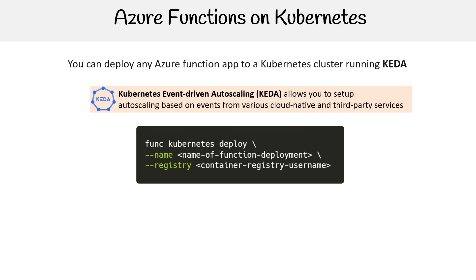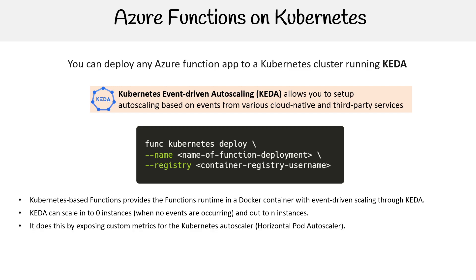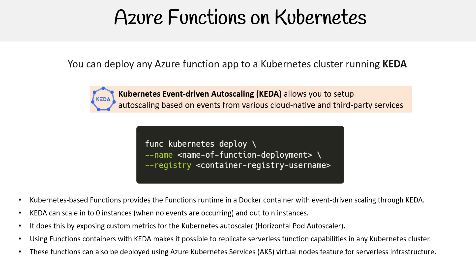I'm going to assume that you'd probably be running AKS, Azure Kubernetes Service. Kubernetes-based functions provide the functions runtime in a Docker container with event-driven scaling through KEDA. KEDA can scale to zero instances with no events occurring, and out to N instances. It does this by exposing custom metrics for the Kubernetes horizontal pod autoscaler.